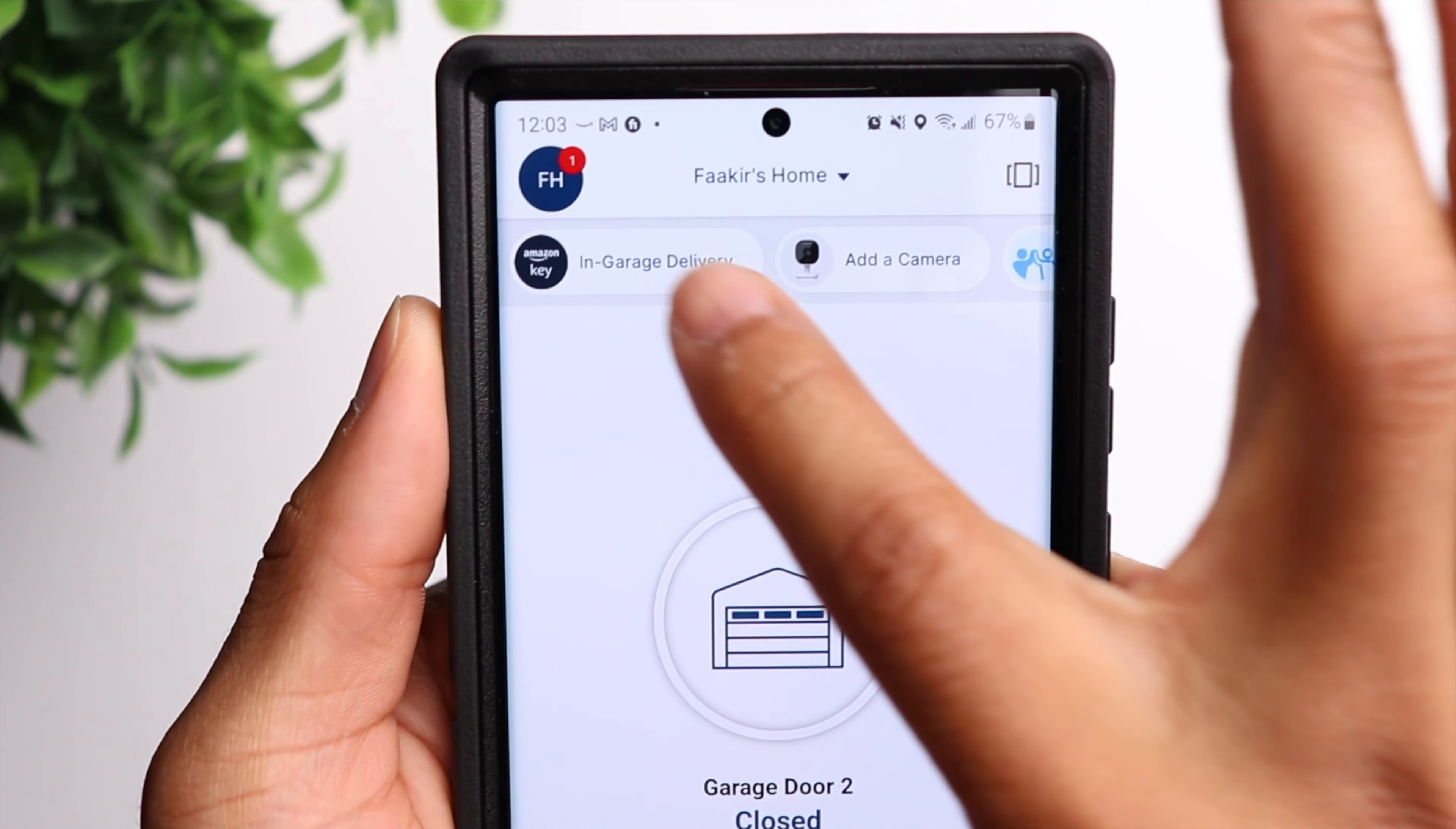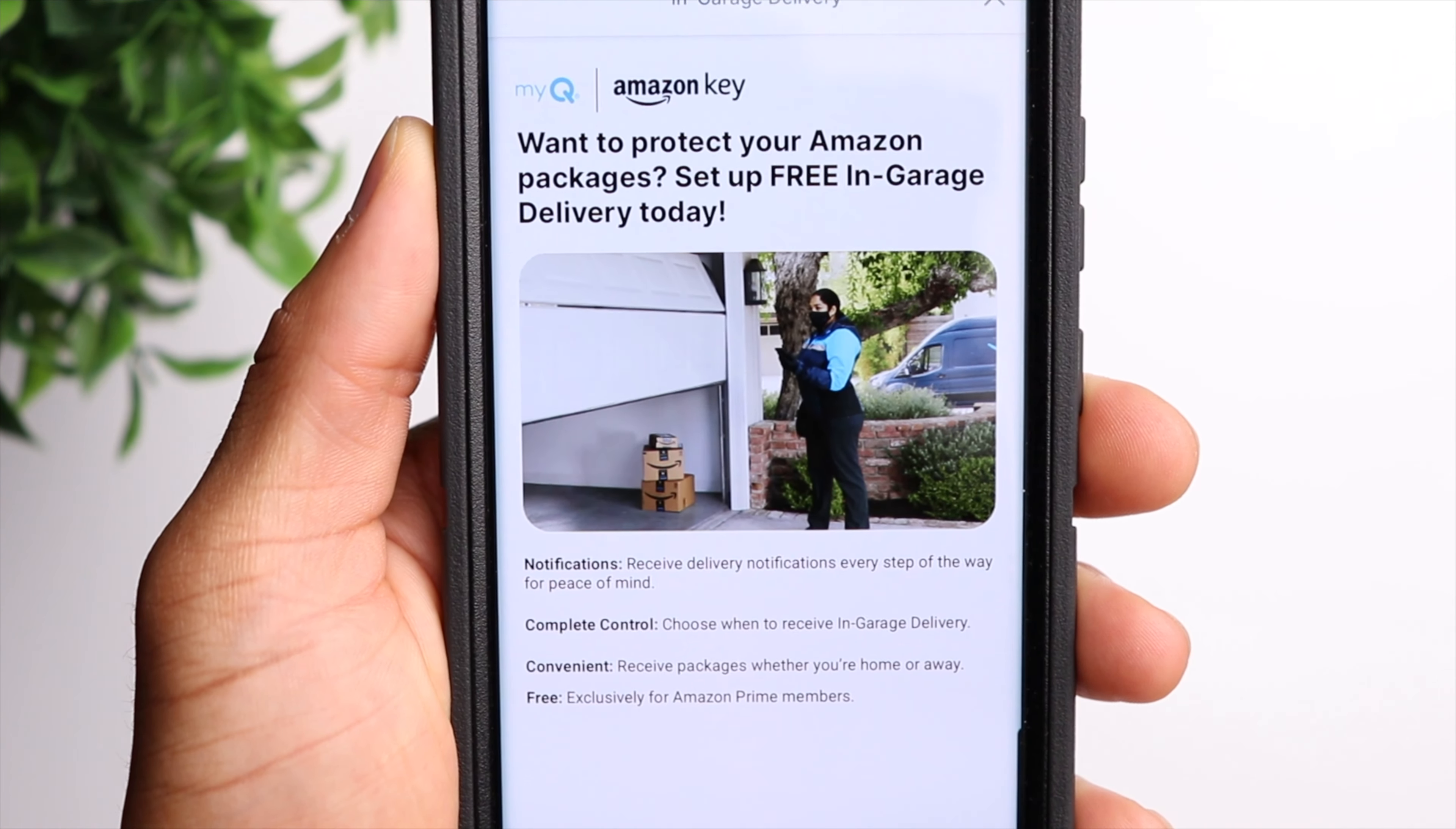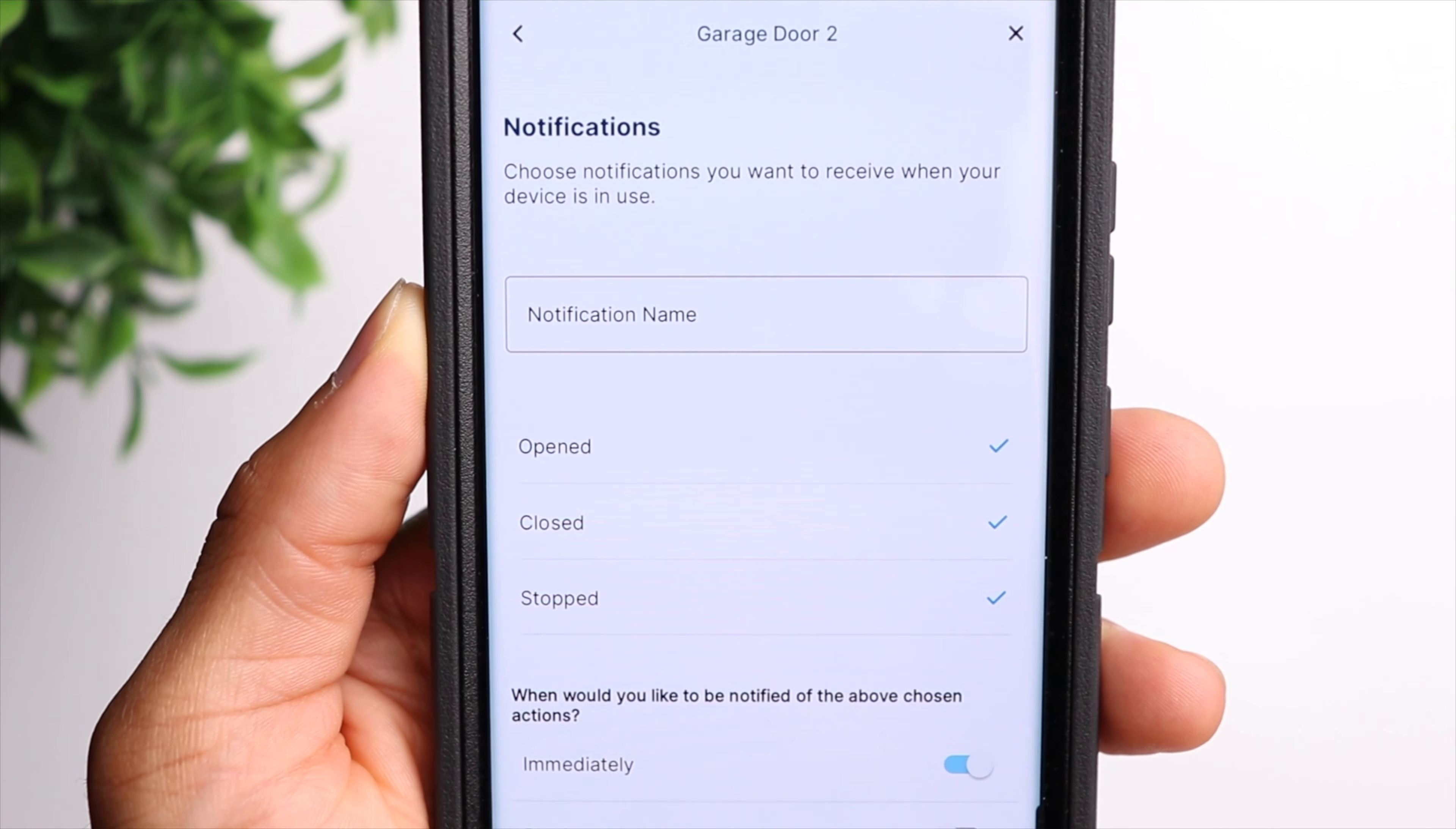The app also has a few other useful features like Amazon and garage delivery. So if you're afraid of your Amazon packages getting stolen from your porch, you have the option to get them delivered directly in your garage. You can also set up notifications so that you get an alert each time your garage is opened or closed.